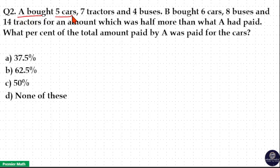A bought 5 cars, 7 tractors, and 4 buses. B bought 6 cars, 8 buses, and 14 tractors for an amount which was half more than what A had paid. What percent of the total amount paid by A was paid for the cars?